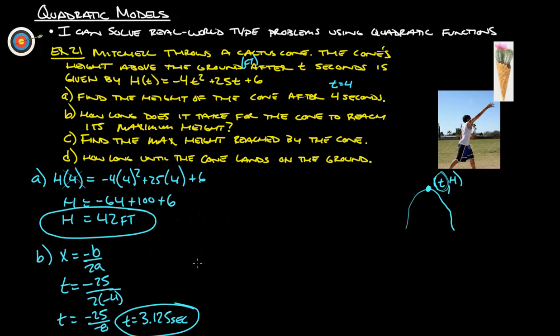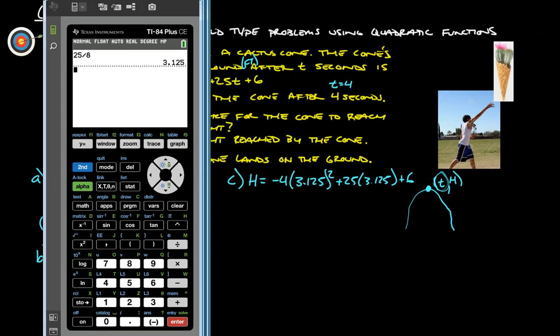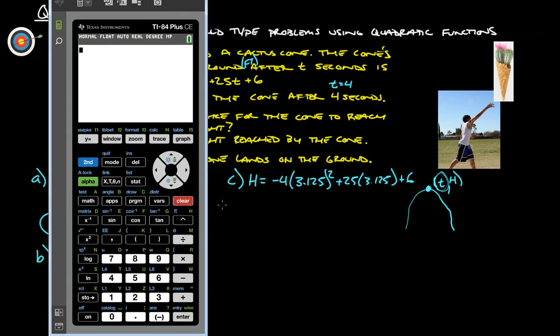Let's take a look at c here. Find the max height reached by the cone. Guess what? We just figured out how long it takes to get to that, so all we do is plug our t into our equation, and it will give us our max height, right? So c is going to equal the height at 3.125, negative 4 times 3.125 squared plus 25 times 3.125 plus 6. So we're just going to plug that whole thing into our calculator, and away we go.